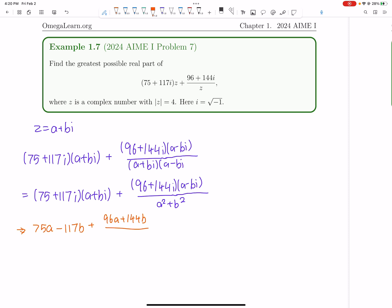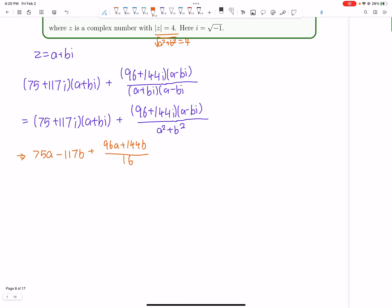Now what is a squared plus b squared? Since the magnitude is 4, so we have square root of a squared plus b squared is 4, a squared plus b squared is just 16. So we get that and that's pretty cool because now this is equal to 75a plus 96a over 16 is 6a. So that just becomes 81a and then minus 117b, plus 9b, so minus 108b.